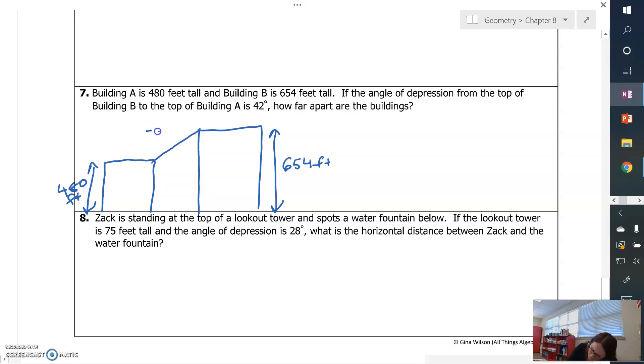If the angle of depression from the top of building B to the top of building A is 42 degrees, so here we go. This is 42 degrees. How far apart are the buildings?